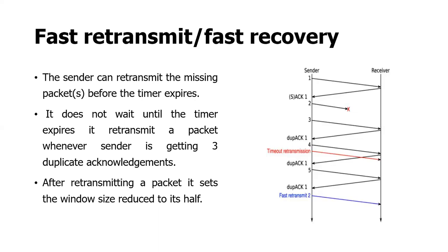So this is fast retransmit and fast recovery. When any packet is lost, it can be recovered easily. The congestion can be recovered easily and the lost packet can be retransmitted during the process of sending the data itself. So this is one of the ways that we can control the congestion control mechanism. Thank you.